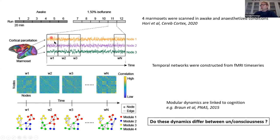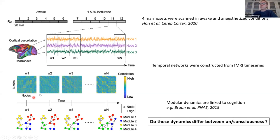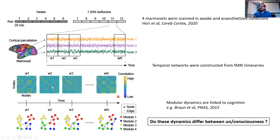For each pair of regions, we calculate the co-variation of their hemodynamic response, and then slide the window over 20 times. What that yields is a multi-slice, or temporal network — in each time slice, we can see these whole brain cortical networks in these maps. The nodes are regions, yellow is high co-variation, and blue is low co-variation.